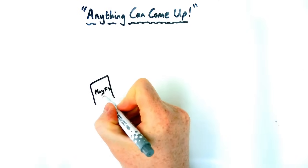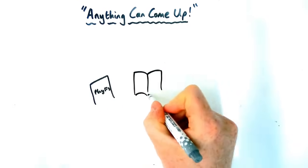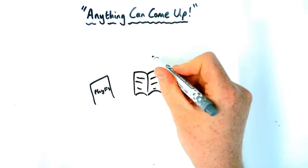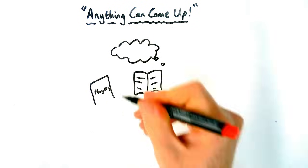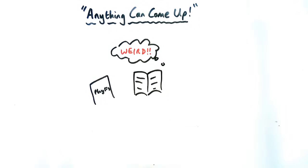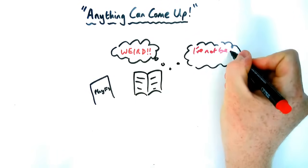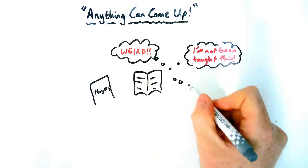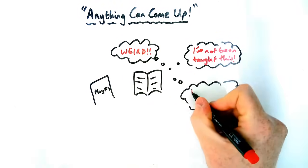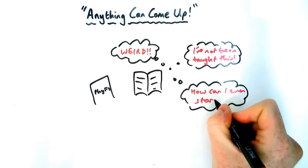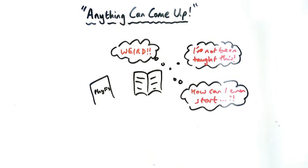In today's video we're going to look at how to answer those weird questions in physics exams that I call 'anything can come up' questions. So in those kind of questions you come out of the exam thinking, ah question six was really weird, how are we expected to know? I've never been taught anything to do with this certain topic. You might not know where to start, you might have left it blank.